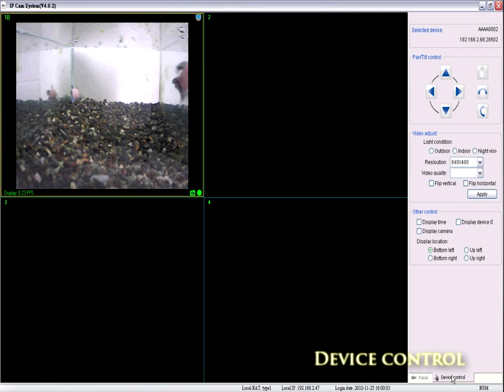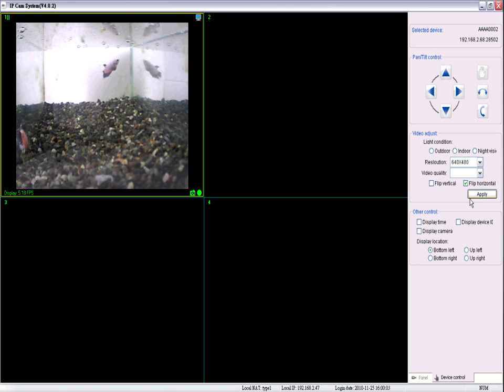Device control: This function can temporarily change camera settings, such as light condition, resolution, video quality, and display information. When the camera restarts, all settings will go back to default.